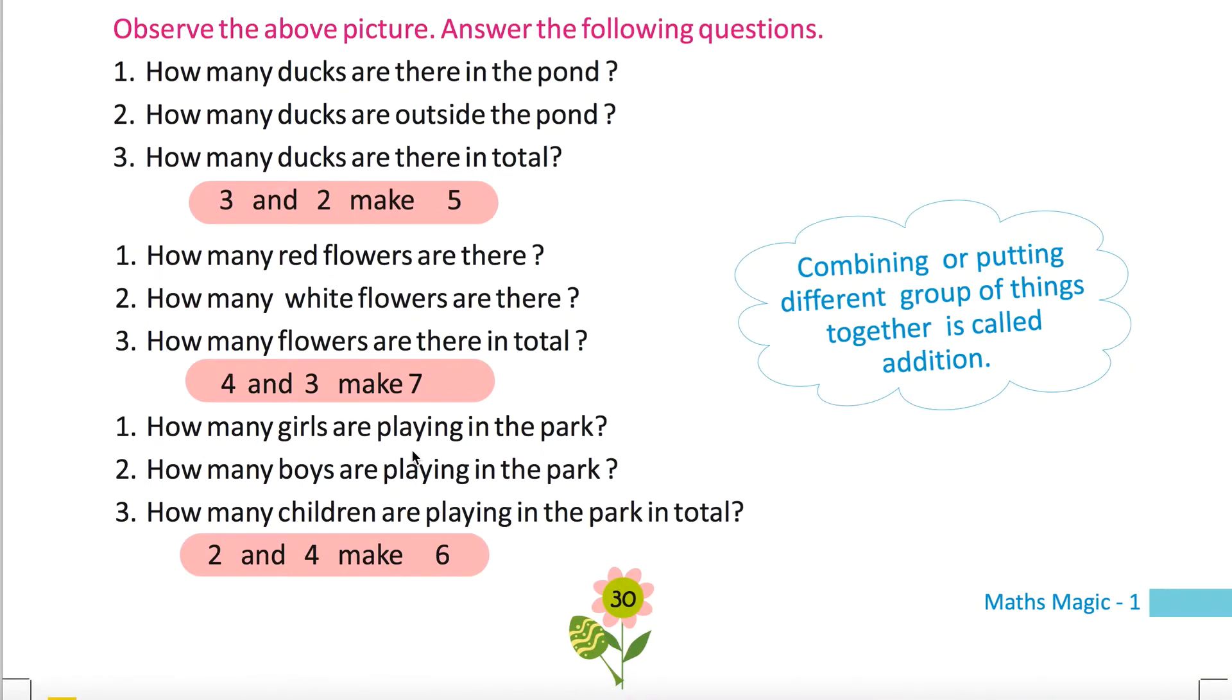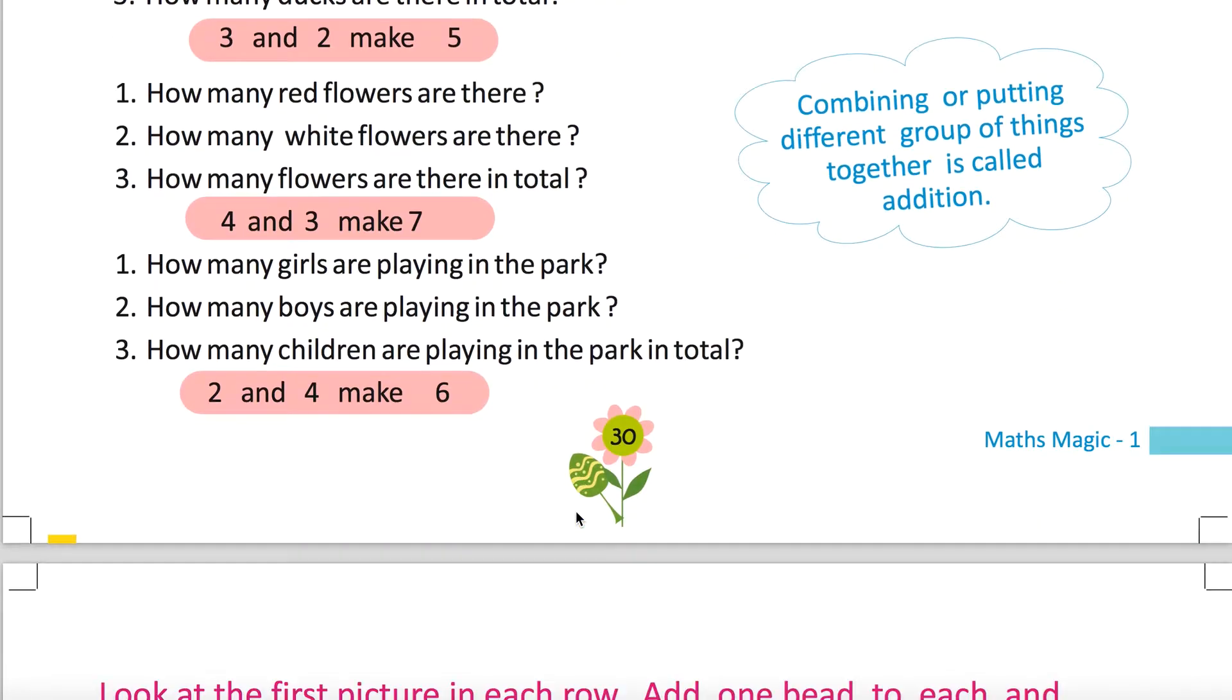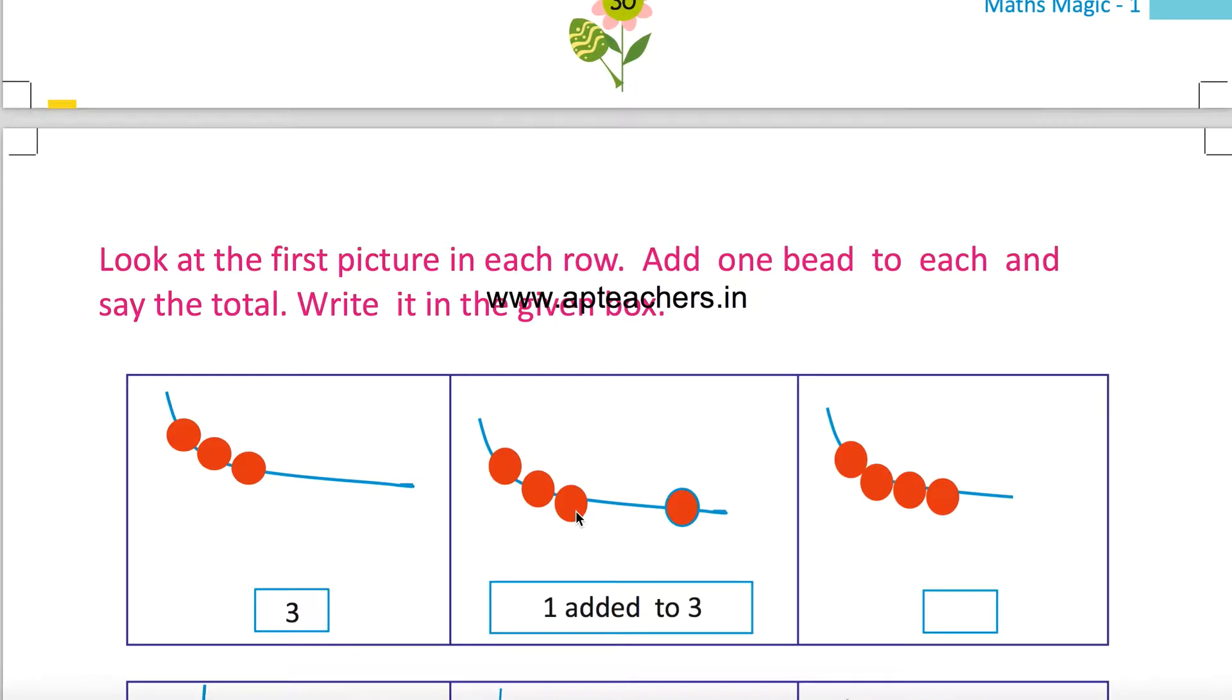How many girls are playing in the park? Two. How many boys are playing? Four. How many children are playing in the park total? Two and four make six.